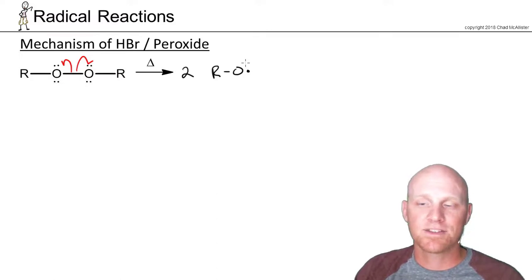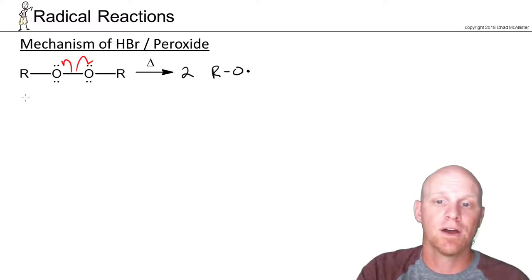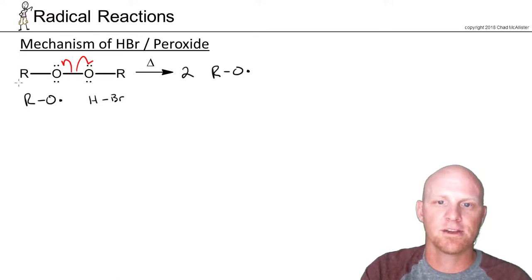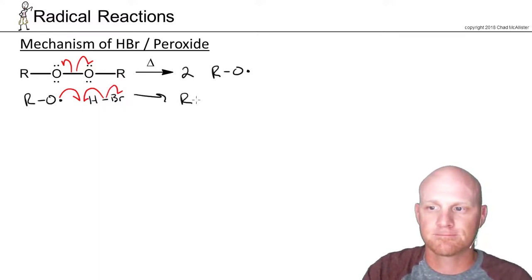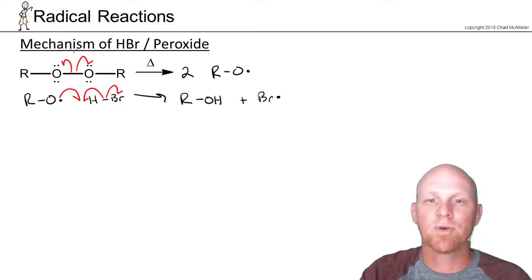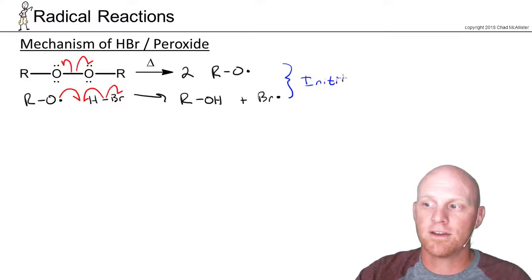And in this case, this is one of the rare cases where we not just have one initiation step. We actually are going to end up having two. So it turns out that alkoxide radical is going to react with a molecule of HBr now. And it's going to abstract a hydrogen. So homolytic cleavage here as well. And we're going to form an alcohol. But we're also going to form a bromine radical. And it is this bromine radical that's going to be involved in our propagation steps. So it actually took two steps to form it. And so these are our initiation steps.